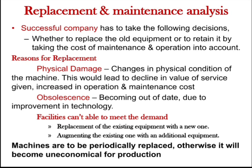Competition among companies in the industrial sector is huge. If a company wants to be successful, they have to take decisions properly regarding equipment. The company has to choose one of the following: the first decision is to replace the old machine, the second is to retain the old machine by doing some maintenance. Each and every equipment has to be replaced after some years of service. The reasons for replacement are either physical damage or obsolescence. Physical damage means a change in the physical condition of the machine — initially the dimensions of components are exact, but after some years of service, friction causes wear and changes in physical condition, which increases operational and maintenance costs.